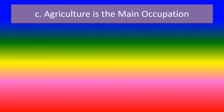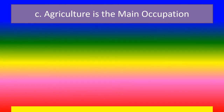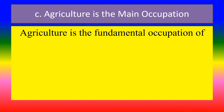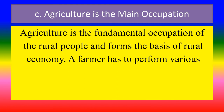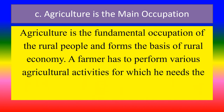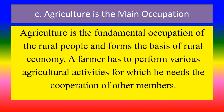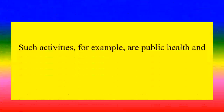C. Agriculture is the main occupation. Agriculture is the fundamental occupation of the rural people and forms the basis of rural economy. A farmer has to perform various agricultural activities for which he needs the cooperation of other members.